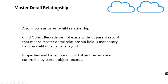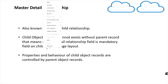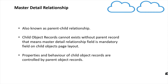Let's discuss master detail relationship first. Master detail relationship is also known as parent-child relationship. In this kind of relationship, child object records cannot exist without parent records — that means the master detail relationship field is mandatory on a child object's page layout. So let's say we have two objects: a school object and a student object, and we need to create a master detail relationship between them.